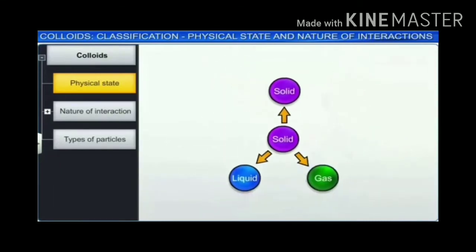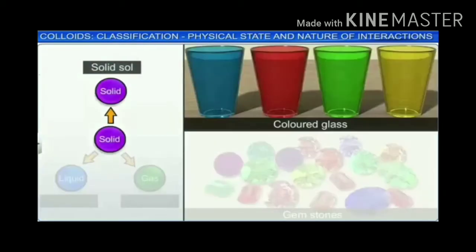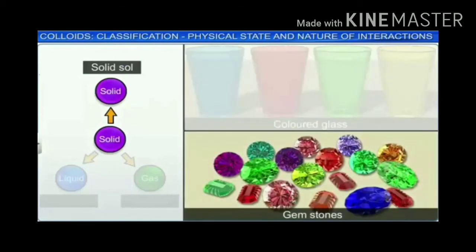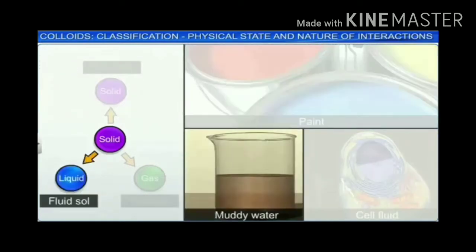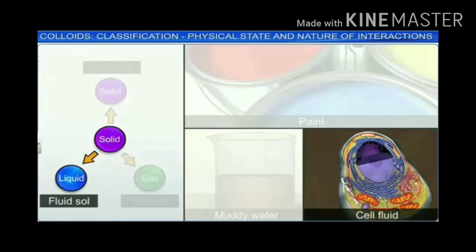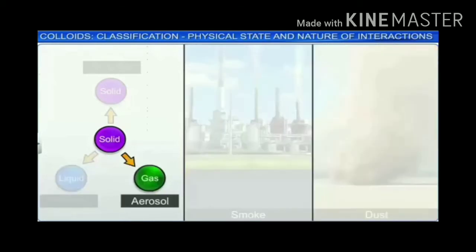Dispersion of a solid in a solid, liquid, or gas dispersion medium results in the formation of a solid sol, fluid sol, and an aerosol respectively. Colored glass and gemstones are examples of solid sol. Paint, muddy water, and cell fluids are fluid sol, mostly referred to as sol. Examples of aerosols are smoke and dust.